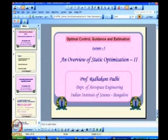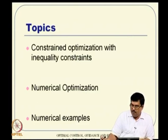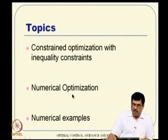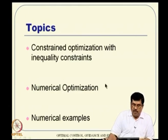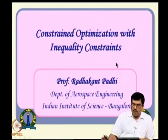Coming to this particular lecture, we will talk about constraint optimization with mainly inequality constraints. Before moving on, we will also have a glimpse of numerical optimization techniques, especially the steepest descent method and Newton line search. Those are the backbone of any optimization technique, including dynamic optimization, meaning optimal control. This is not a course on static optimization, so we will not take a lot of time analyzing various techniques, but it is good to have some idea of what numerical optimization is. Then we will follow up with some numerical examples before winding up this lecture.